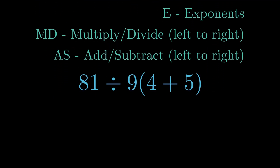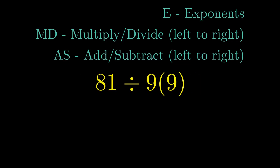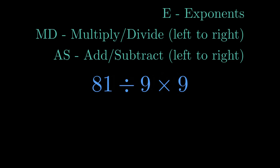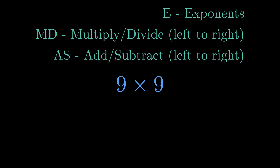Back to our expression. First step: handle the parentheses. 4 plus 5 inside the parentheses simplifies to 9. Now notice — 9 sitting directly next to 9 in parentheses is implied multiplication; no explicit times sign needed. It's shorthand for 9 multiplied by 9. Now we face the tiebreaker: division on the left, multiplication on the right — same priority level. Left to right means division happens first. 81 divided by 9 is 9, leaving us with 9 times 9, which equals 81.